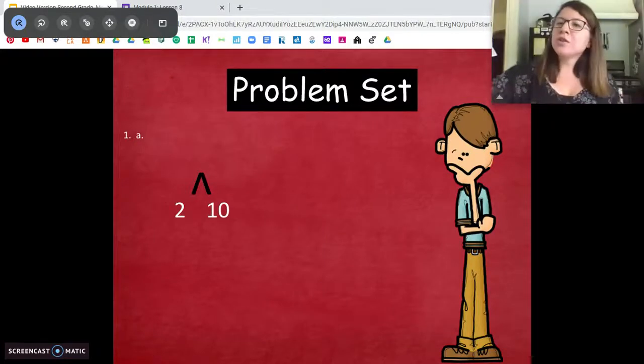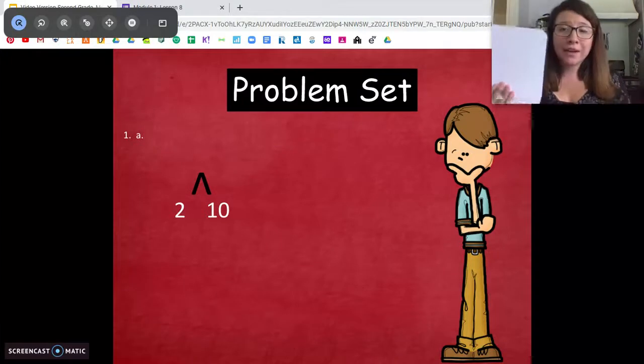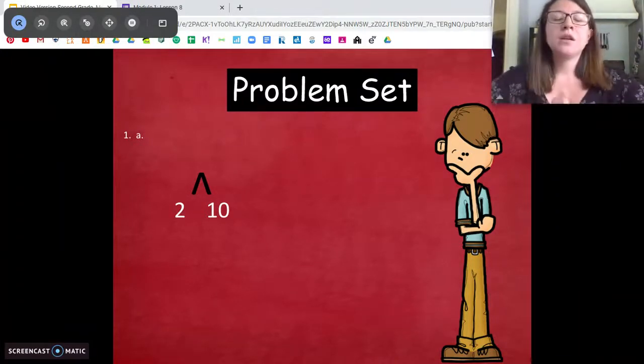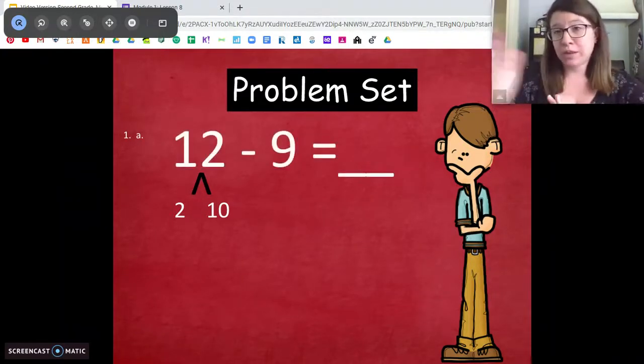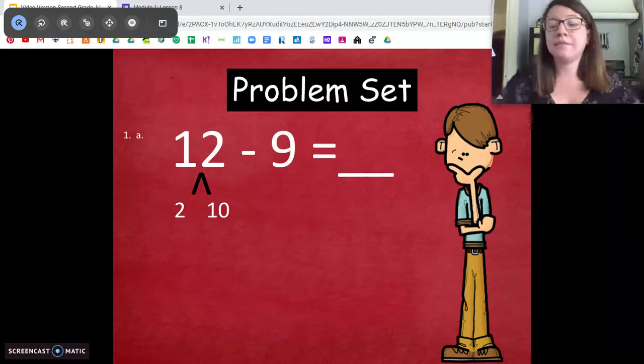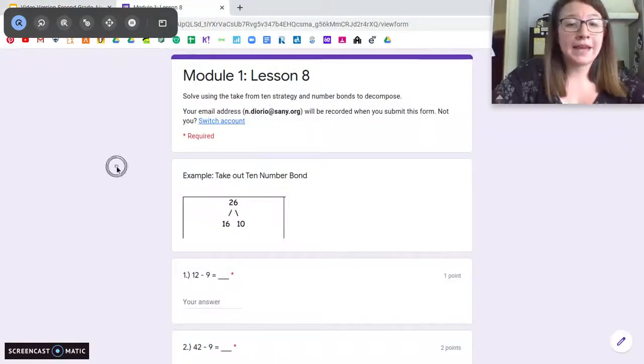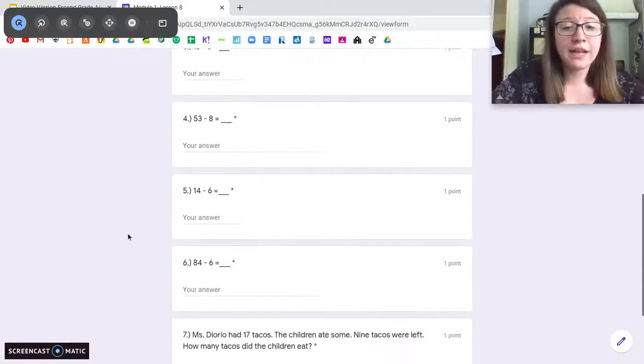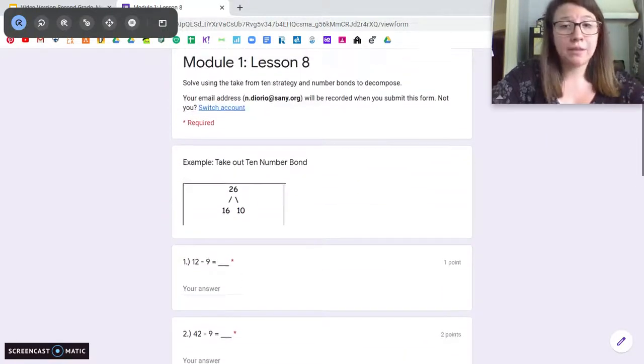That's it. So you're just using what you know when you're applying it to bigger numbers. Always draw a picture if you don't know. It helped me figure it out so I don't mess it up. So your problem set today is going to be going over these facts. It's going to start you off easy with a 12 minus 9. Take out the 10 and then go from there. Solve it with those steps. Then it gets a little bit harder. We have 42, we have 53, we have 84, and we have a word problem.